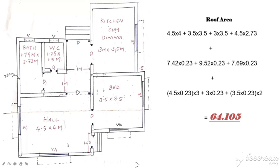We will take the roof slab area. How do we take the thickness for the RCC? That is 0.6. Now we calculate the roof slab area.